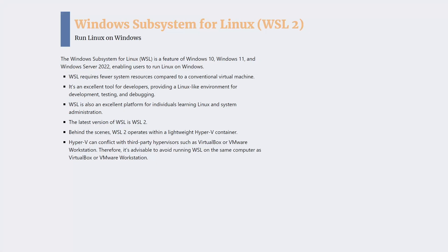Welcome to this video on how to install Windows Subsystem for Linux on Windows 10 and Windows 11. Windows Subsystem for Linux, or WSL, is a feature in Microsoft Windows that lets you run Linux on Windows without having to install a virtual machine. WSL does not provide the same features as a hypervisor, but it is easier to use and has minimal resource consumption. This makes it an excellent tool for developers, system administrators, and anyone looking to use Linux command tools and services within Windows, or to learn the Linux command line interface.